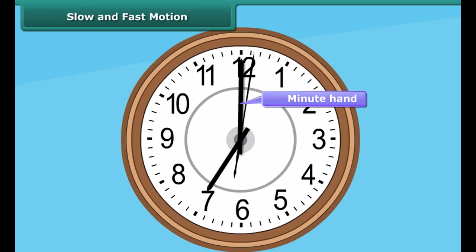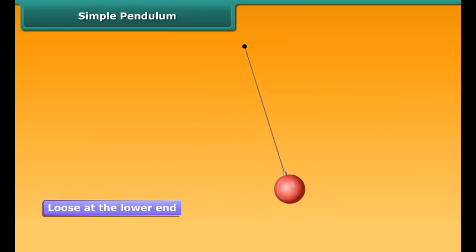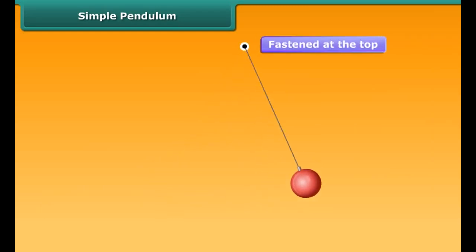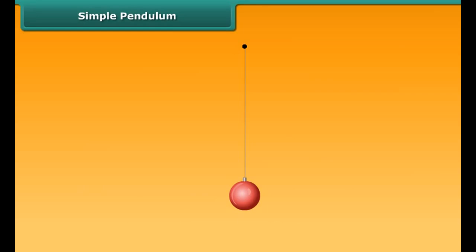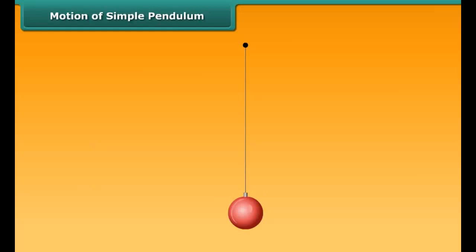The needle smaller than the second hand and longer than the hour hand is the minute hand. It moves slower than the second hand but faster than the hour hand, completing one revolution in one hour. A simple pendulum consists of a small metallic ball suspended by a thread. The metallic ball is called the bob of the pendulum. The thread is loose at the lower end and fastened at the top to a stand. When the pendulum is not moving, it is said to be at rest — this position is also known as the mean position or the equilibrium position of the pendulum.